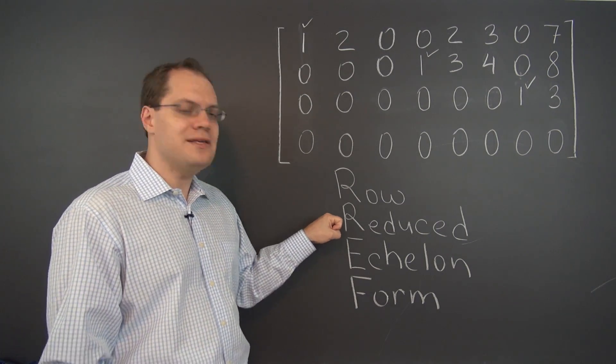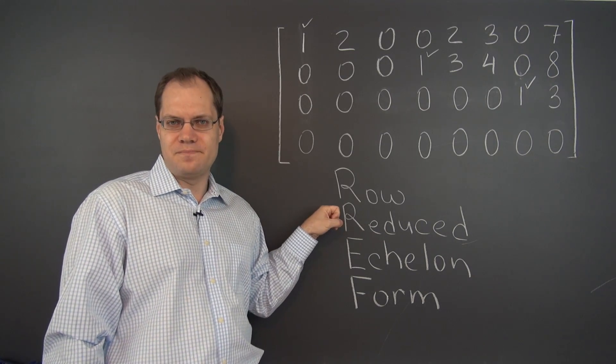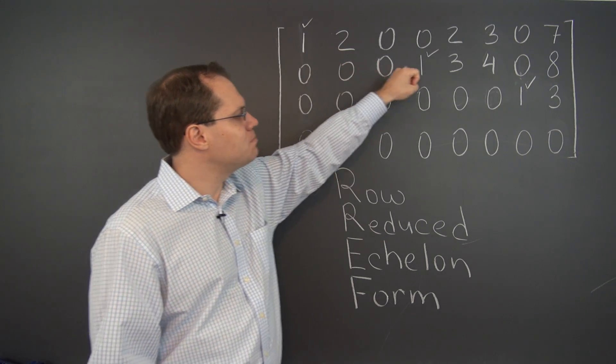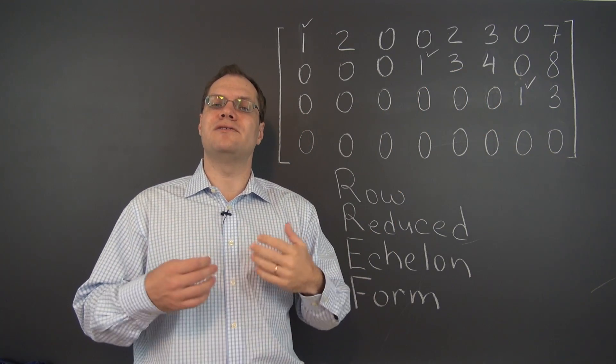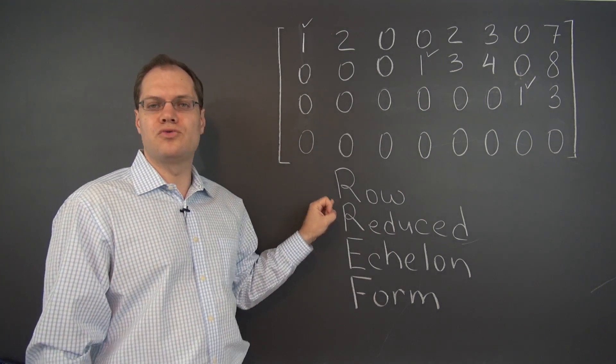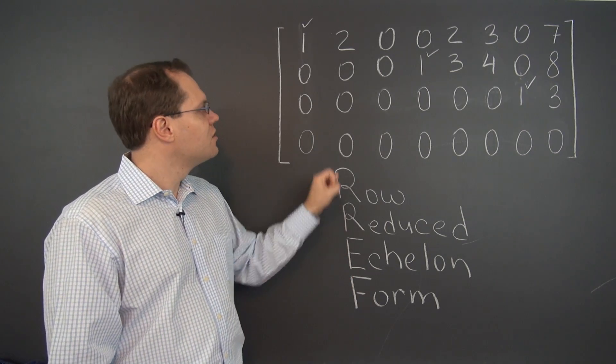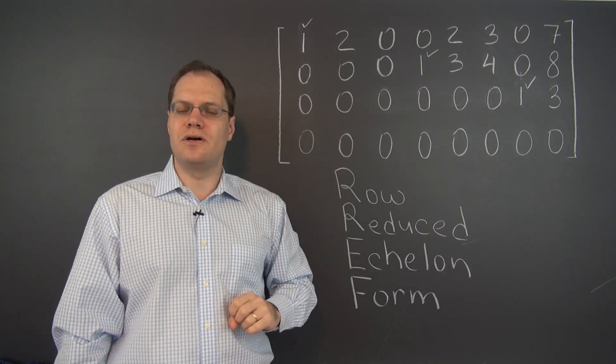The word reduced means that pivots equal one. If the pivots were simply non-zero entries with values other than one, it would be called row echelon form. Reduced refers to the fact that the pivots are one.